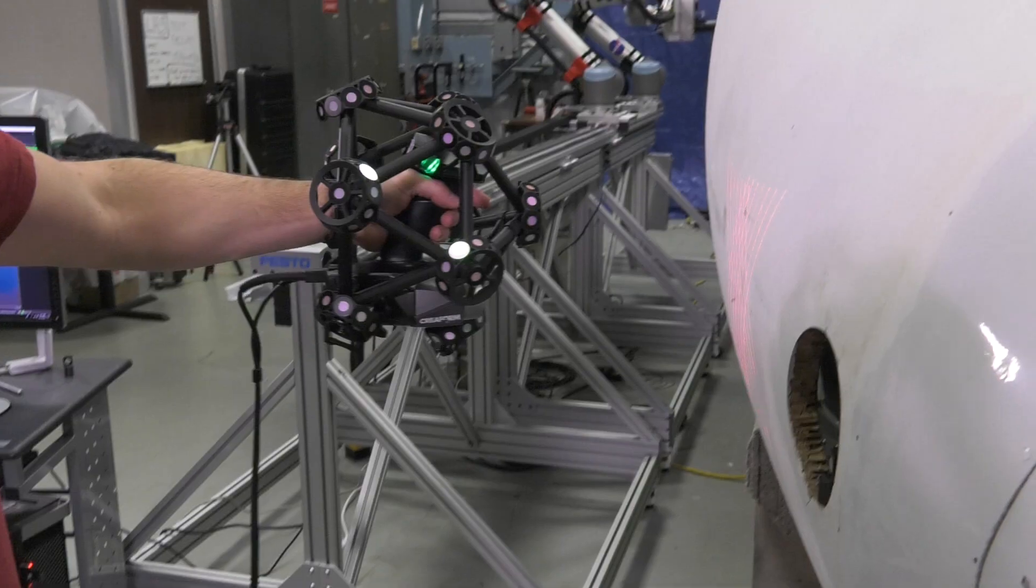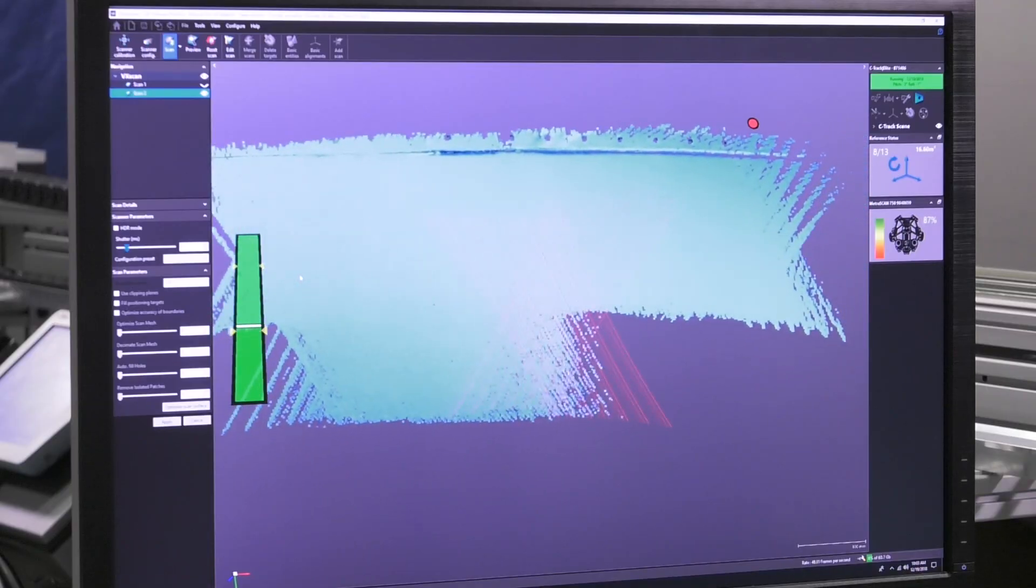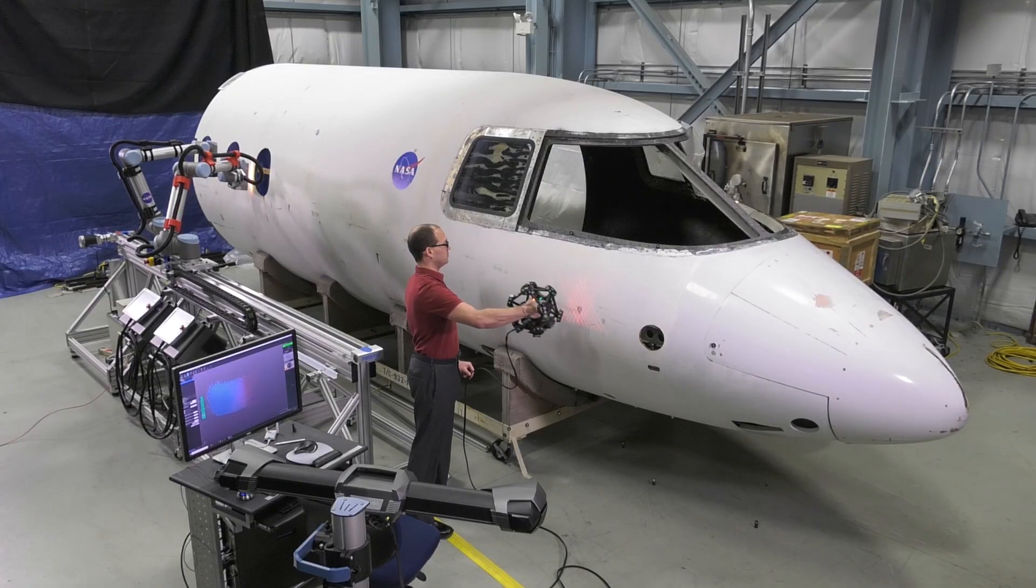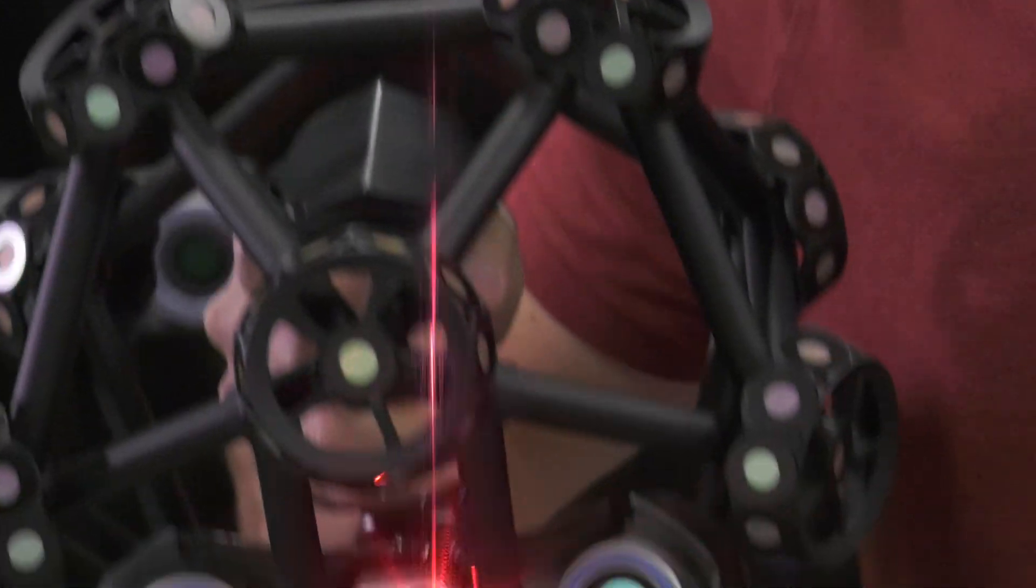Before we actually do a scan, we use an optical three-dimensional scanner that allows us to make a surface map of the fuselage. That allows us to know exactly where it is in space and where it is relative to the robots.